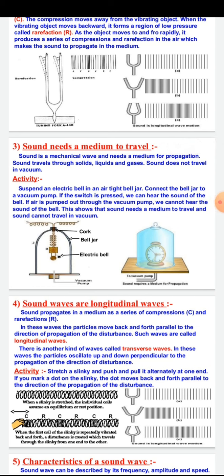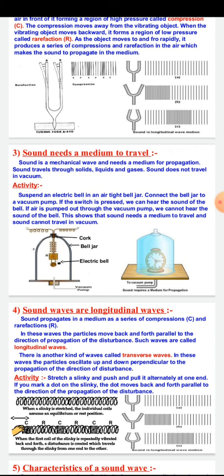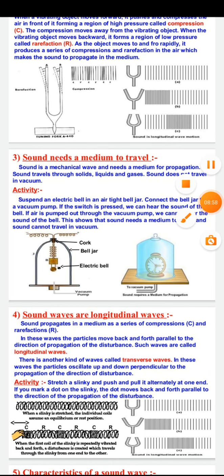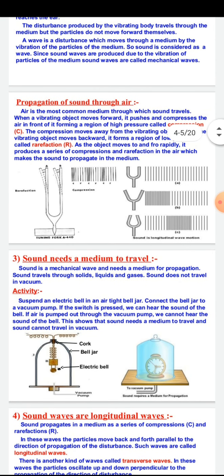Place an electric bell inside an air-tight bell jar. Connect the bell jar to a vacuum pump. If the switch is pressed, we can hear the sound of the bell. But if the air is pumped out through the vacuum pump, the sound of the bell is not heard. This shows that sound needs a medium to travel and cannot travel in vacuum.